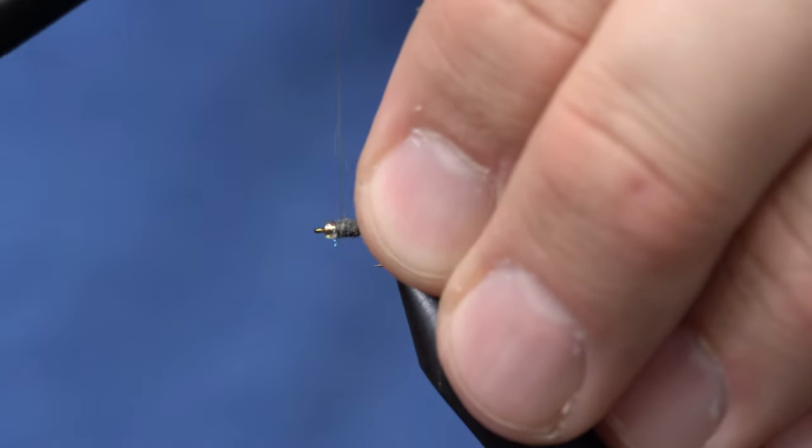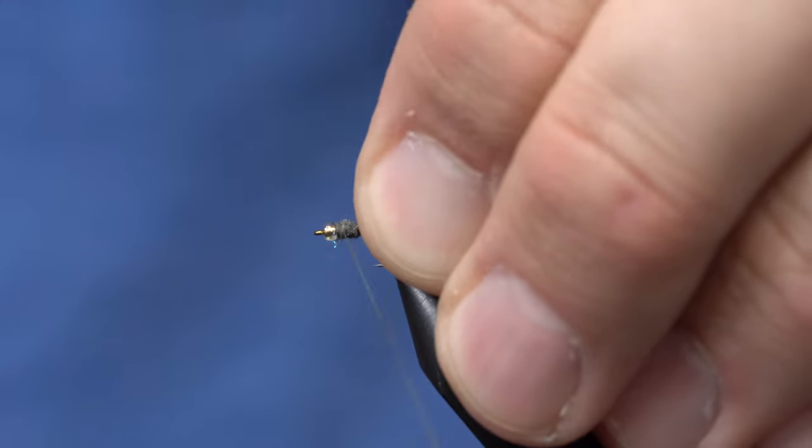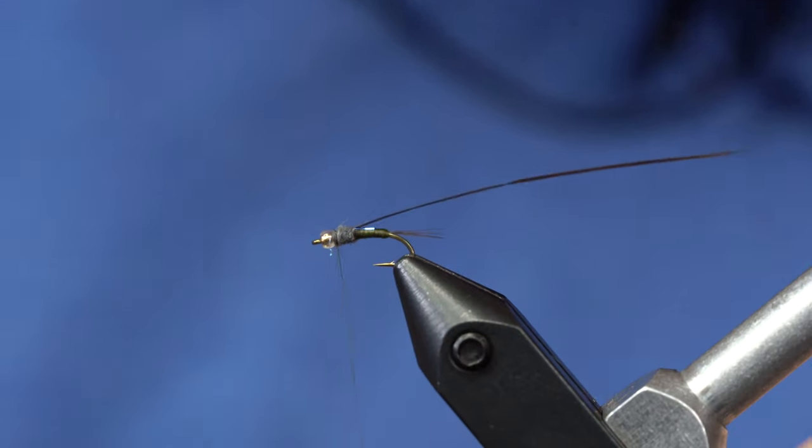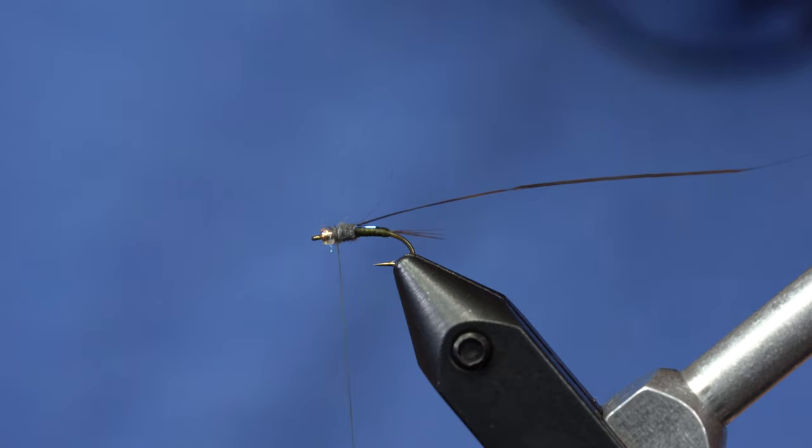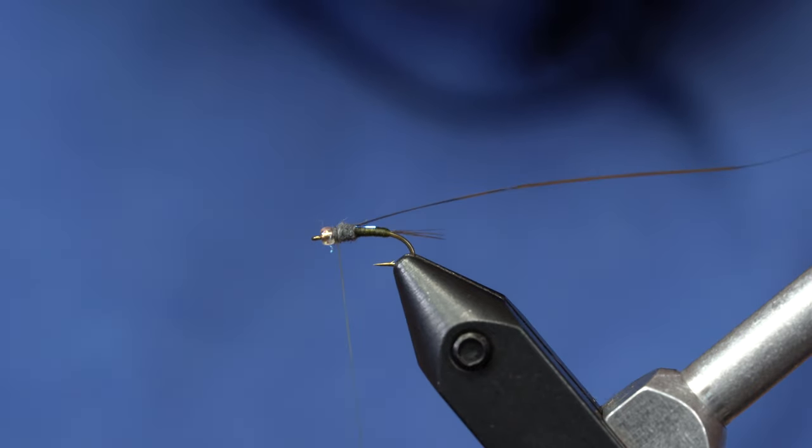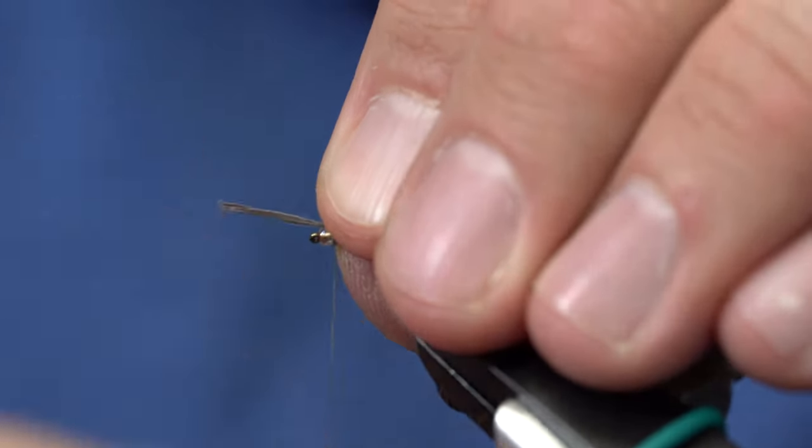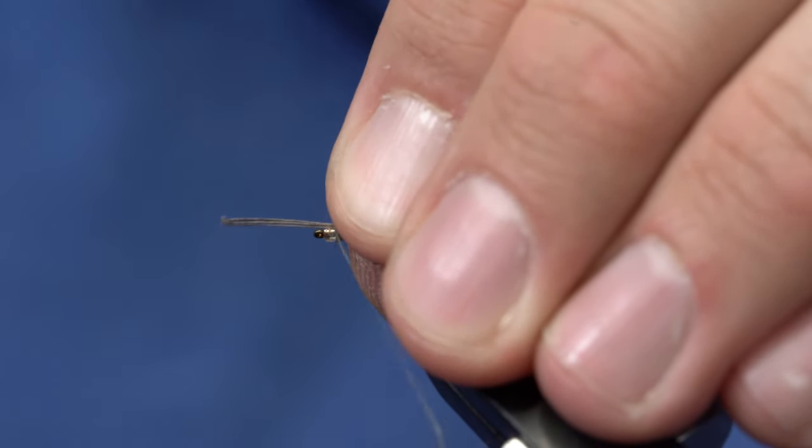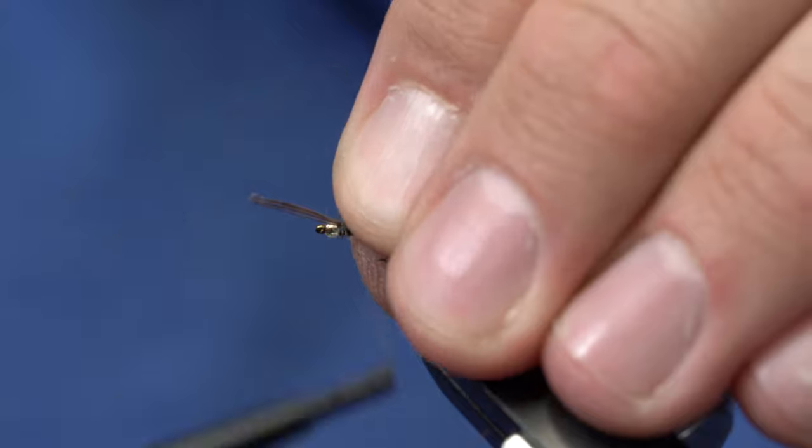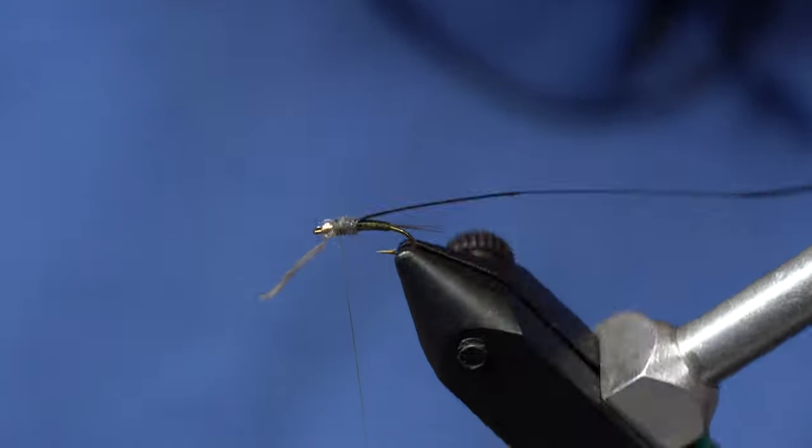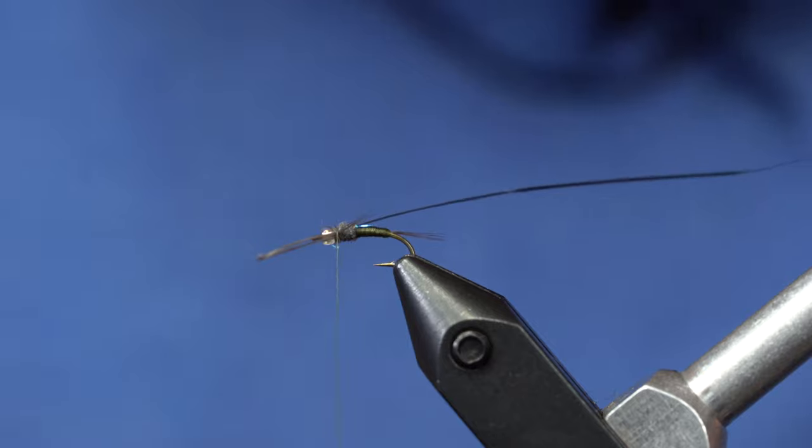Alright to tie these legs in I'm going to actually advance the thread back into the dubbing a little bit. You don't want it right by the bead because it will push the legs out at an unnatural angle. And now I'll just grab four or five of these hen fibers and I'll lay those right on the side of this fly. And tie those in so that they kick off about like that and I'll do that on the other side as well.